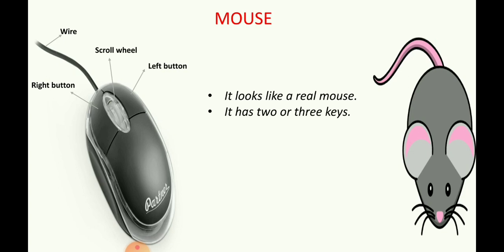And here our real mouse have 2 ears. Right. Like that, here there are 2 buttons for our computer mouse. What are that? One is left button and the next is right button. And the center we have a wheel. It is called the scroll wheel. And both the mouse have tail.